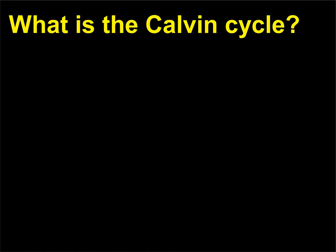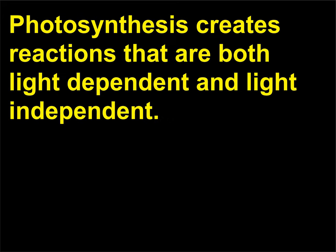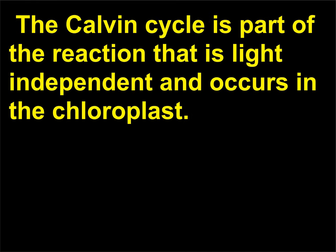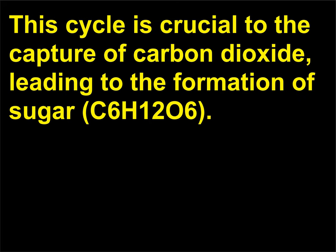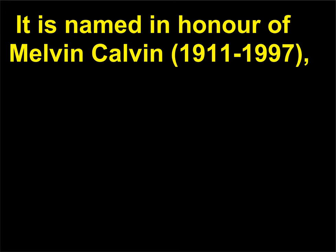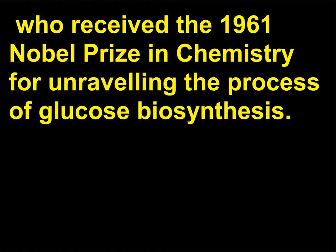What is the Calvin cycle? Photosynthesis creates reactions that are both light dependent and light independent. The Calvin cycle is part of the reaction that is light independent and occurs in the chloroplast. This cycle is crucial to the capture of carbon dioxide, leading to the formation of sugar, C6H12O6. It is named in honor of Melvin Calvin, 1911–1997, who received the 1961 Nobel Prize in Chemistry for unraveling the process of glucose biosynthesis.